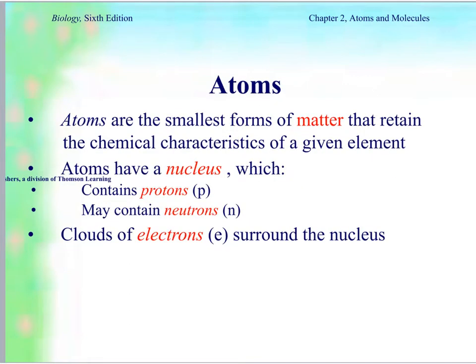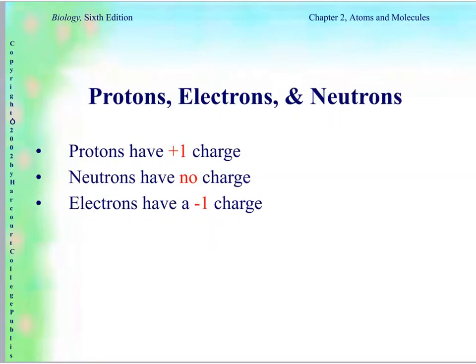Atoms are the smallest forms of matter that can retain the chemical characteristics of a given element. Atoms have a nucleus in the center. The nucleus contains protons, abbreviated P, and neutrons, abbreviated N. They might not have any neutrons. Outside of the nucleus you find the electrons, abbreviated E. Protons have a plus one charge, neutrons have no charge, and electrons have a minus one charge.